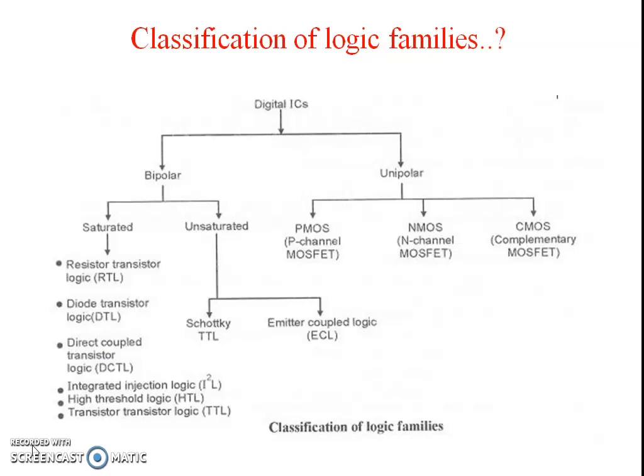The next point is unsaturated logic family. In unsaturated logic, the transistor switches between the cutoff region and the active region — cutoff to active and active to cutoff — and this is called unsaturated logic. It is classified into two types: Schottky transistor-transistor logic and emitter-coupled logic (ECL). In ECL, the emitters of two transistors are connected together, and it is used for high-speed applications.